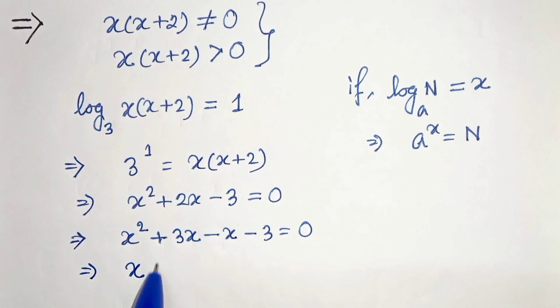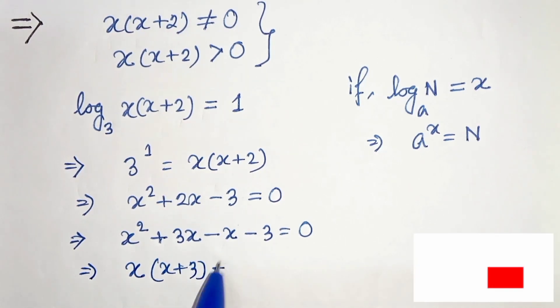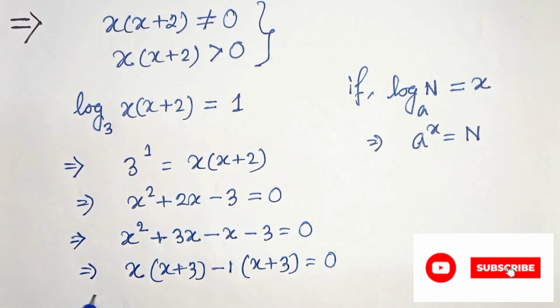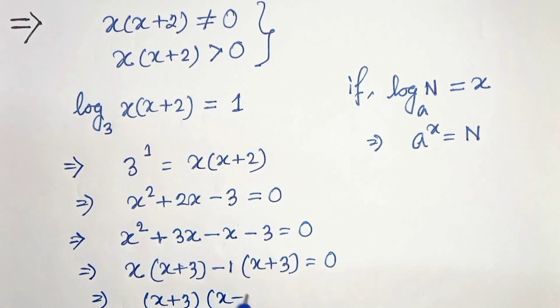Next we will take common x times x plus 3, and from here we will take common minus 1, so it will be x plus 3 equals 0. And the next step, x plus 3 is common, so x minus 1 equals 0.